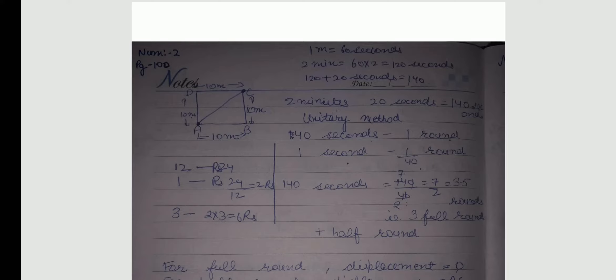In numerical, it is given that farmer takes 40 seconds to move or to complete a circle of a square field. We have to calculate displacement of farmer at the end of 2 minutes 20 seconds.